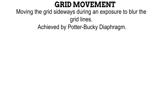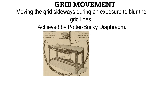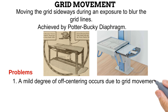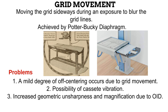The Potter-Bucky diaphragm was originally fitted under the X-ray table but has advanced into other forms, such as the erect Bucky used for erect radiographic exams. However, grid movement has a few setbacks. First, a small amount of off-center errors can occur due to the sideways movement. Also, the movement can cause the cassette to vibrate, leading to motion unsharpness on the image. Lastly, the Bucky device does not allow the cassette to be in contact with the anatomy, introducing object-image distance that causes some magnification and geometric unsharpness.